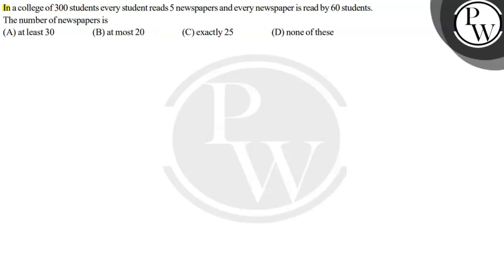The question says: in a college of 300 students, every student reads 5 newspapers and every newspaper is read by 60 students. The number of newspapers is — option A: at least 30, option B: at most 20, option C: exactly 25, and option D: none of these.